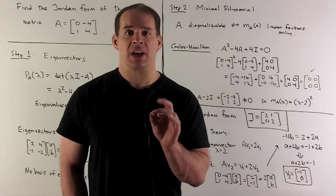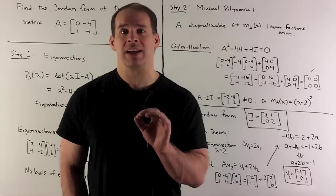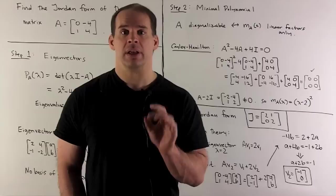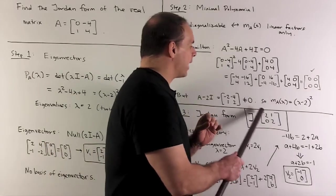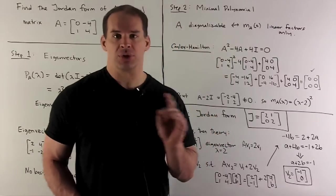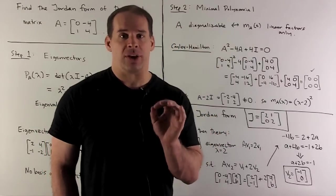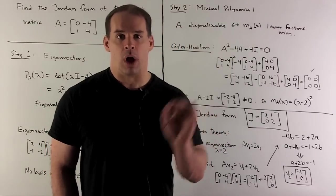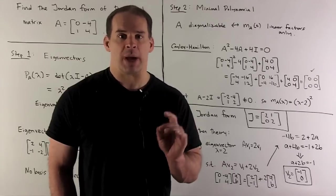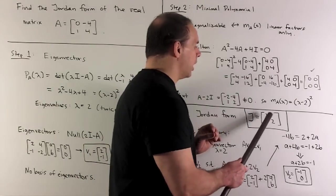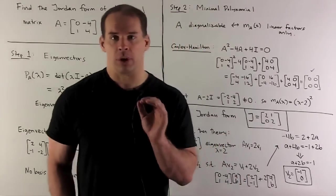So, the idea here is, I just need to tell you how to set up a Jordan block, and then we're done. Now, to set one up, we put the eigenvalue down the diagonal. So, it's going to be 2s on the diagonal. For the diagonal above the main diagonal, we put 1s. And then every other entry is 0. So, for our special case, I have [[2, 1], [0, 2]] as my Jordan form.